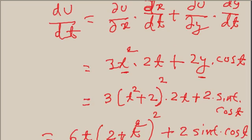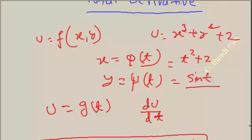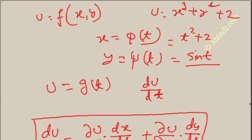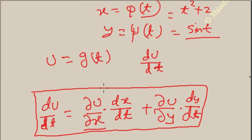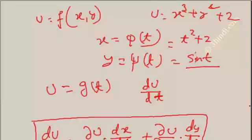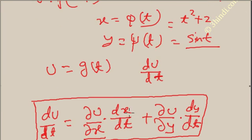So du/dt, where u is a function of x and y, and x is another function of t, and y is another function of t — you can differentiate it with respect to t using this formula. Remember: you can differentiate u partially with respect to x and y because u is a function of two variables x and y. And you can differentiate x with respect to t because x is a function of the single variable t.